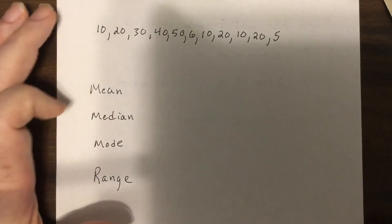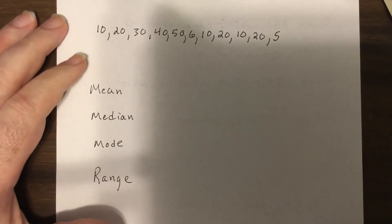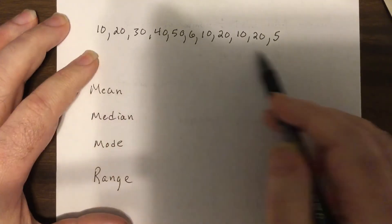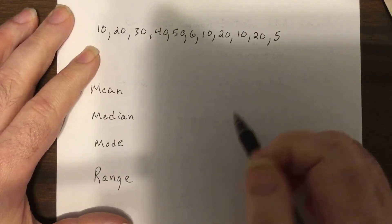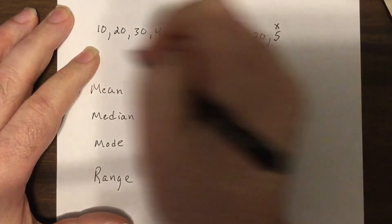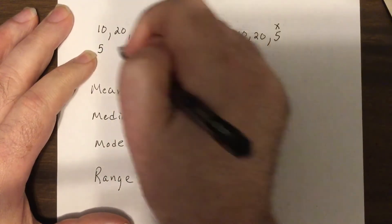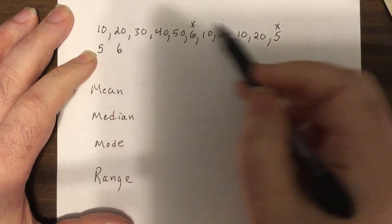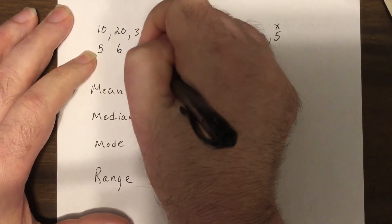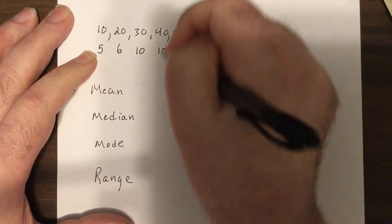So go ahead and do this now and then turn me back on. Thank you. Okay, now I like to before I even start, put the numbers smallest to biggest. So I have a 5, I have a 6, I have 1, 2, 3 tens.